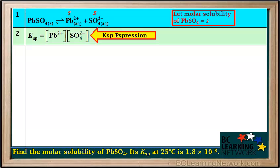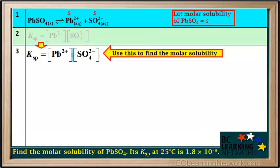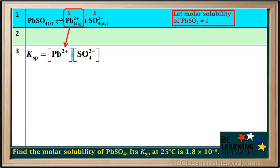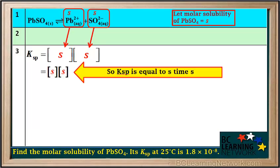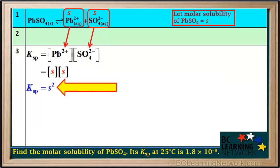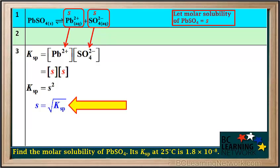Ksp equals the concentration of Pb2+ times the concentration of SO4 2-. In step 3, we use the Ksp expression to find the molar solubility. Looking at the equilibrium equation, the concentration of Pb2+ equals S, and the concentration of SO4 2- also equals S. So we substitute S into the Ksp expression for both ions. Ksp equals S times S, which equals S squared. To solve for S, we take the square root of both sides, giving S equals the square root of Ksp.